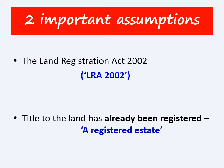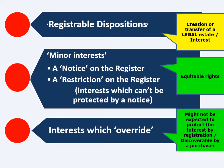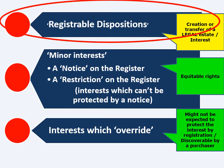Here's a quick reminder of what we saw in the first video: the three different categories of property rights that you need to know when dealing with registered title. So we have registrable dispositions, which is what I'm looking at today, minor interests, and interests which override.